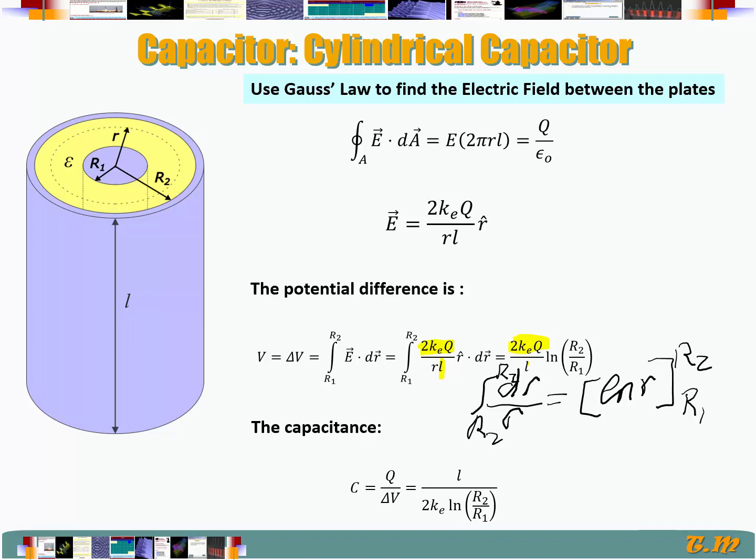So that's going to be natural log of r2 minus natural log of r1. And that's what we have here.